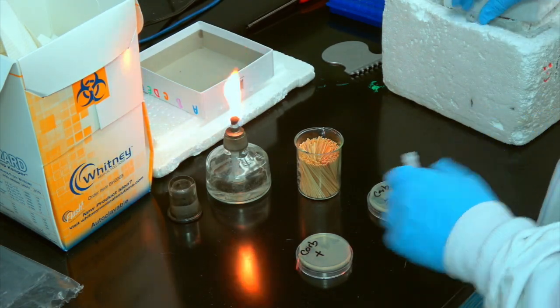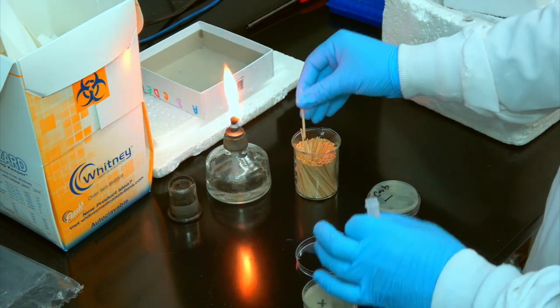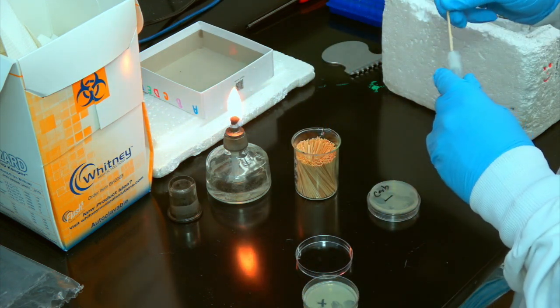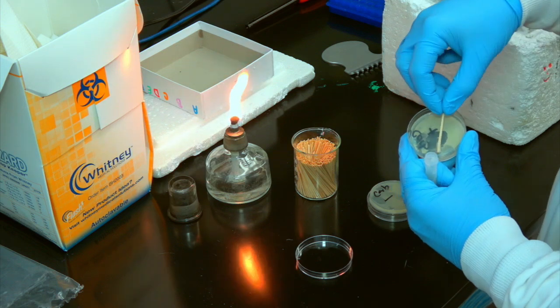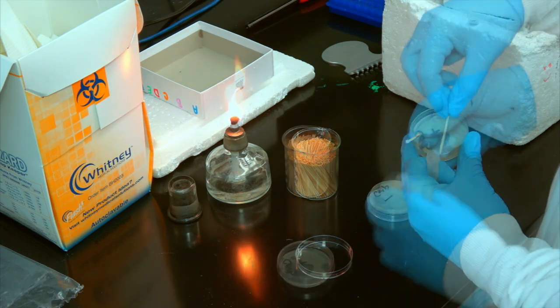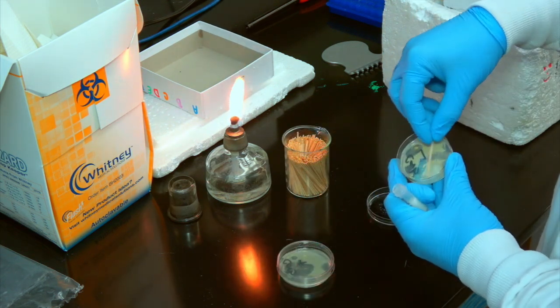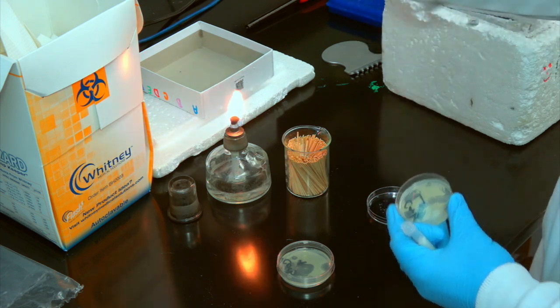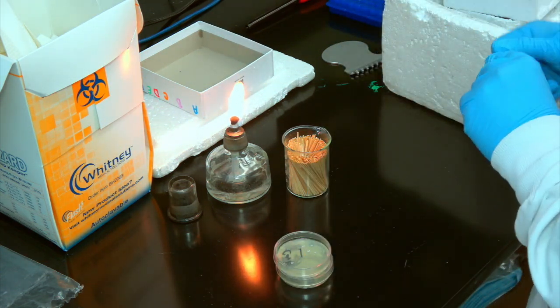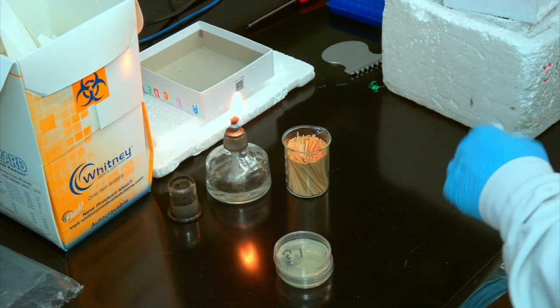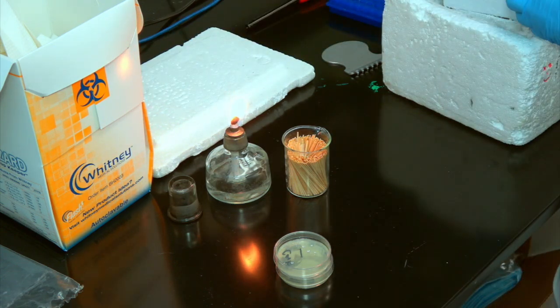Once our plates have solidified and dried, we test them to make sure the antibiotic functions properly. To do so, we pull out two plates. On the first plate, we streak out a strain that we know to be resistant to the antibiotic. On the second plate, we streak out a strain that's not resistant to the antibiotic. We then incubate both plates overnight at the appropriate growth temperature. If we prepared our plates properly, only the resistant strain should grow.